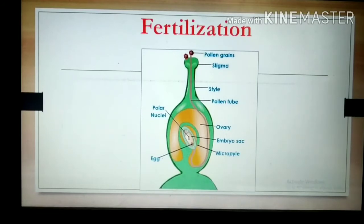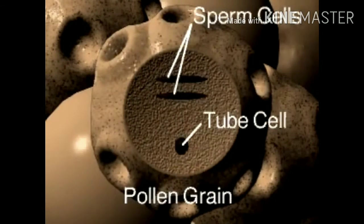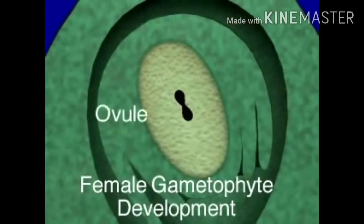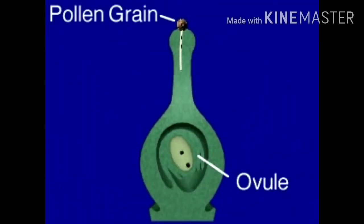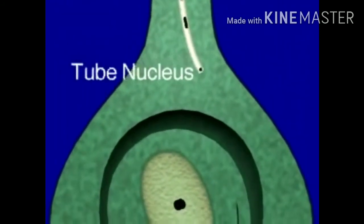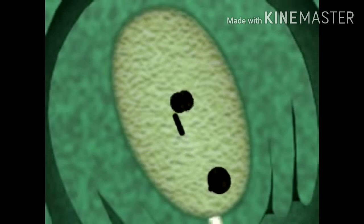We can understand double fertilization through a video. In flowering plants, double fertilization involves the fusion of two sperm cell nuclei of the male gametophyte with two cell nuclei of the female gametophyte. The tube cell of the pollen grain elongates to form a pollen tube. The tube nucleus leads the way through the tissue of the style toward the female gametophyte. The two sperm cells travel through the pollen tube and enter the ovule. One sperm fuses with the haploid egg cell to form the zygote, and the other sperm unites with the diploid central cell to form a triploid cell that will develop into endosperm.